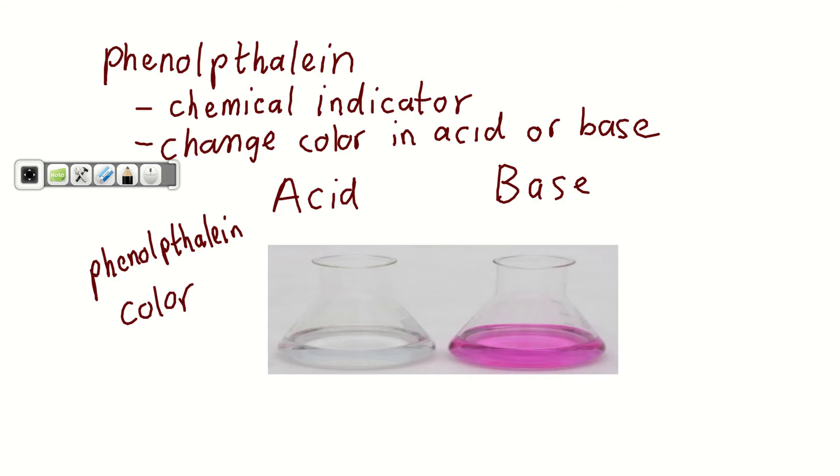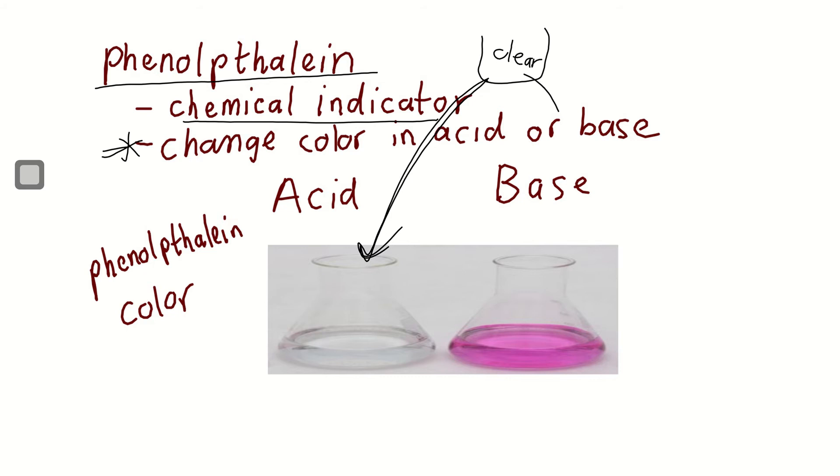One more. This is a very common one in the lab. There's one called phenolphthalein. It's another chemical indicator. Something that changes color in the presence of an acid or a base. Phenolphthalein itself is just basically a clear color. If you add it to an acid, it'll stay clear. If you add it to a base, it'll turn this pink or magenta color. A lot of people like to call it magenta to be more specific. So acid when it's clear, magenta when it's a base.